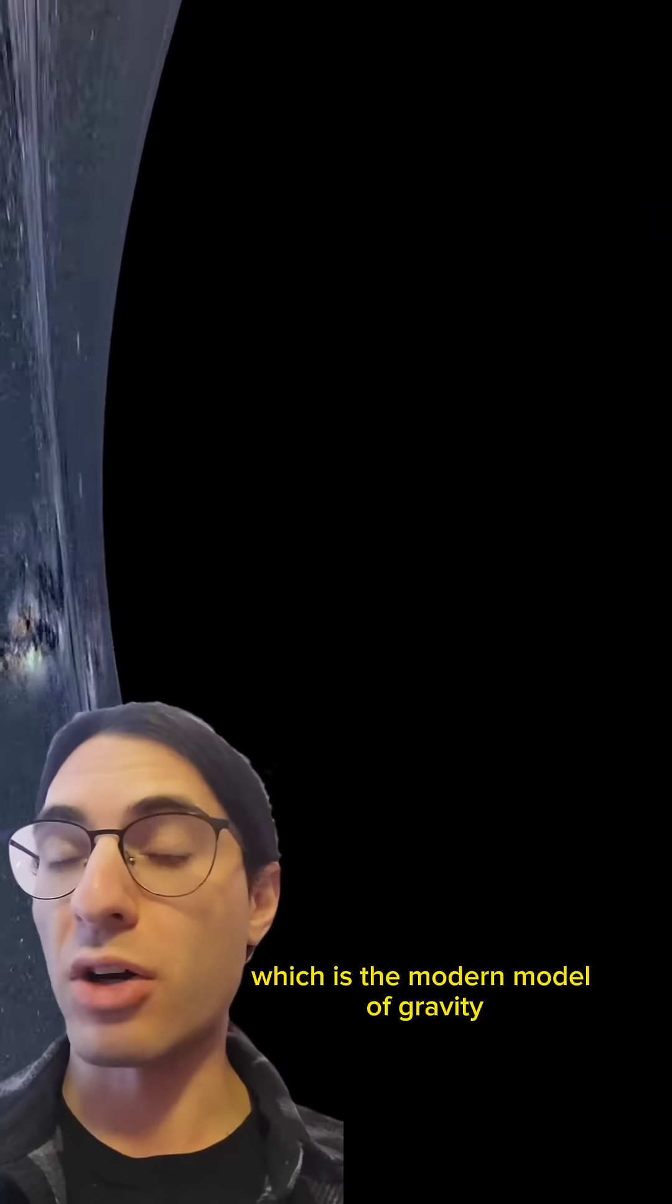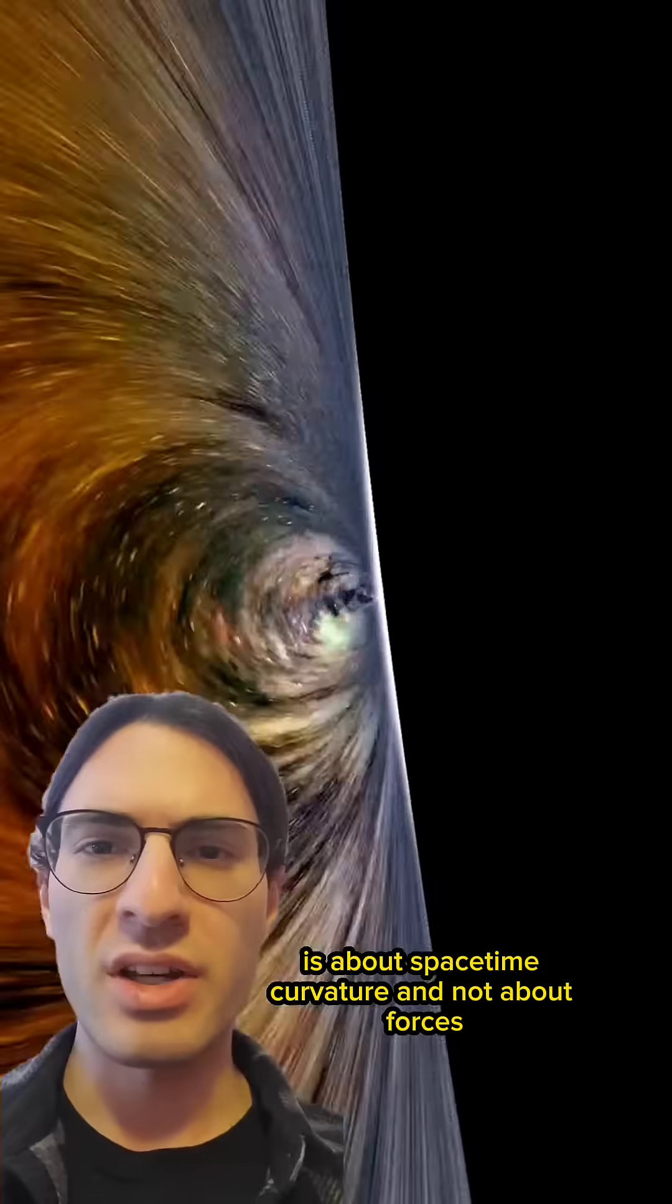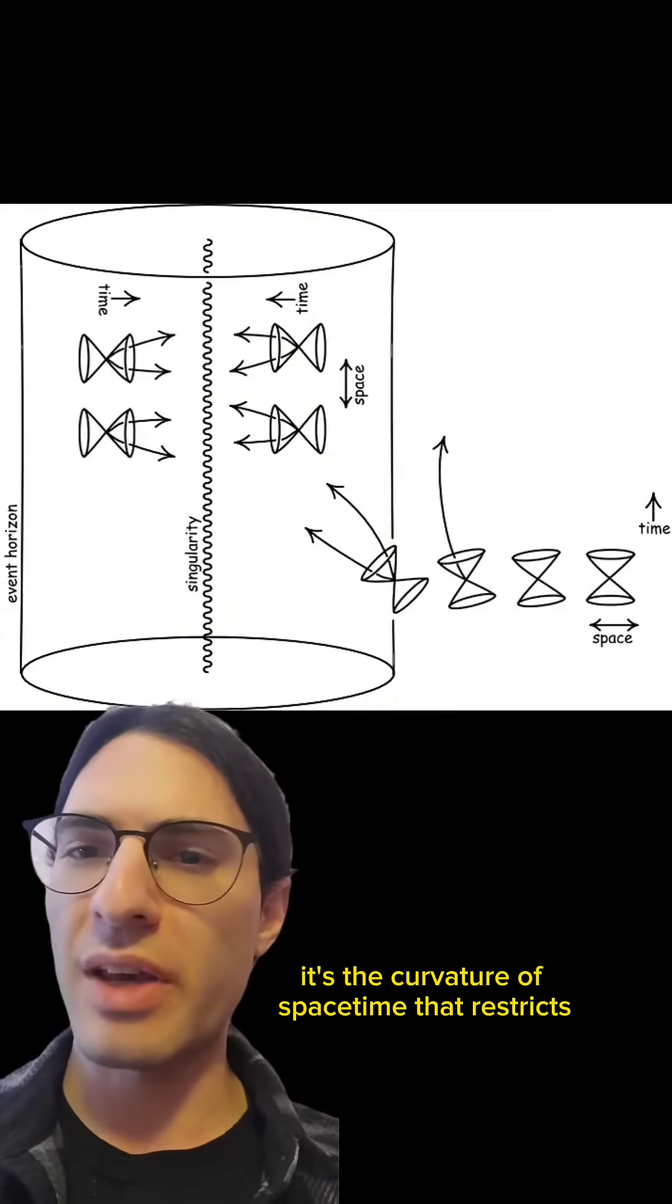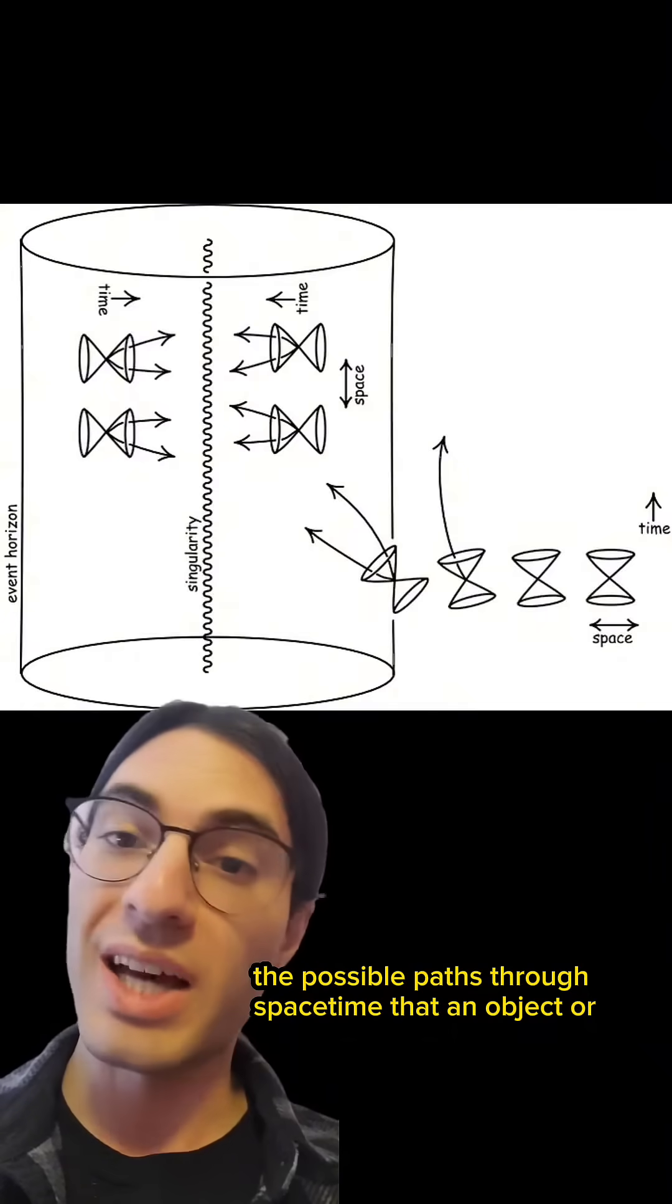But general relativity, which is the modern model of gravity, is about spacetime curvature and not about forces. In this model, it's the curvature of spacetime that restricts the possible paths through spacetime that an object, or light, can take.